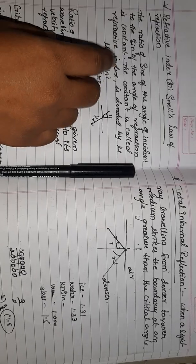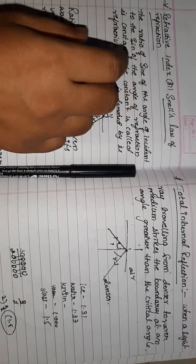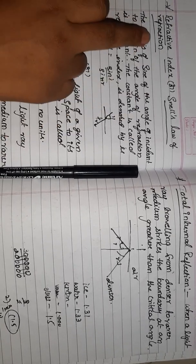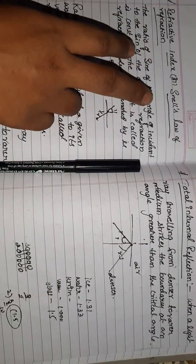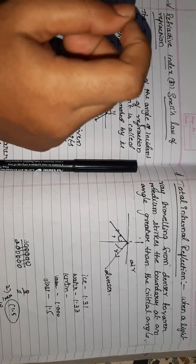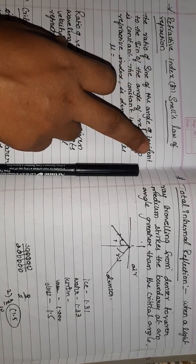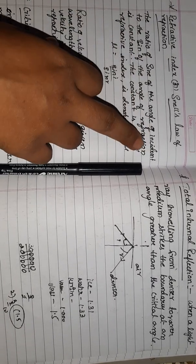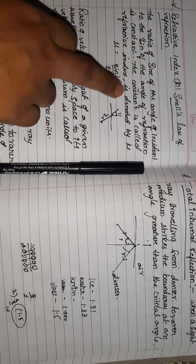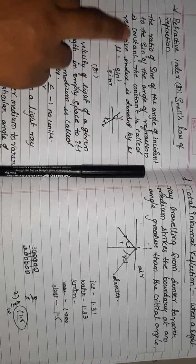So, when bending occurs between two mediums, there will be a difference. How much bending is happening is how we describe the refractive index. The refractive index is a value for a medium. The ratio of the sine of the angle of incidence to the sine of the angle of refraction is constant. That constant is called the refractive index, denoted by mu.